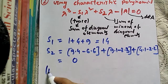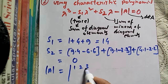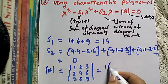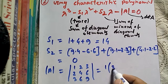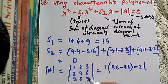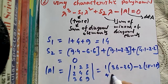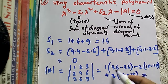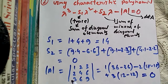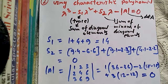Now we find the determinant of matrix A, which is [1, 2, 3; 2, 4, 6; 3, 6, 9]. The determinant is 1×(36−36) − 2×(18−18) + 3×(12−12) = 0. So we have all three ingredients: S1 = 14, S2 = 0, and determinant of A = 0.